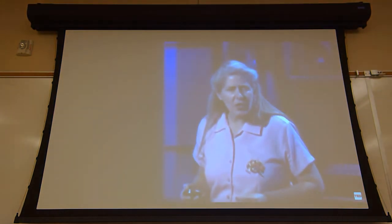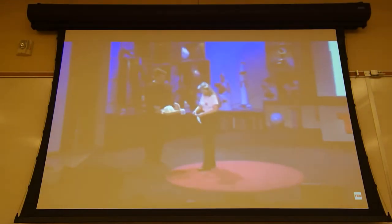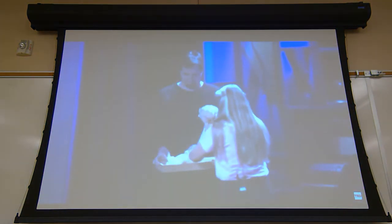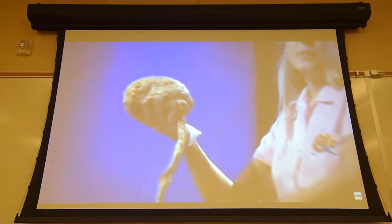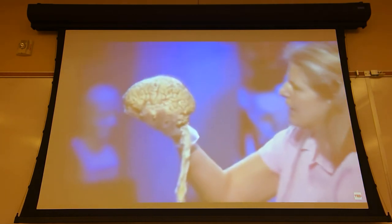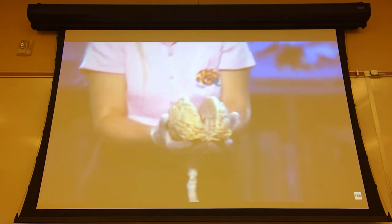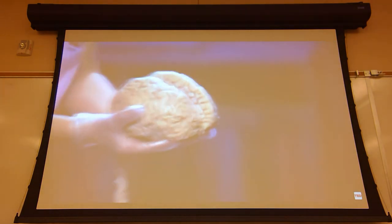On the morning of the hemorrhage, she could not walk, talk, read, write, or recall any of her life. She essentially became an infant in a woman's body. She brought a real human brain to the TED stage. The two hemispheres are completely separate from one another. This is the front of the brain, the back, with the spinal cord hanging down — this is how it would be positioned inside the head. The two cerebral cortices are completely separate across the hemispheres.